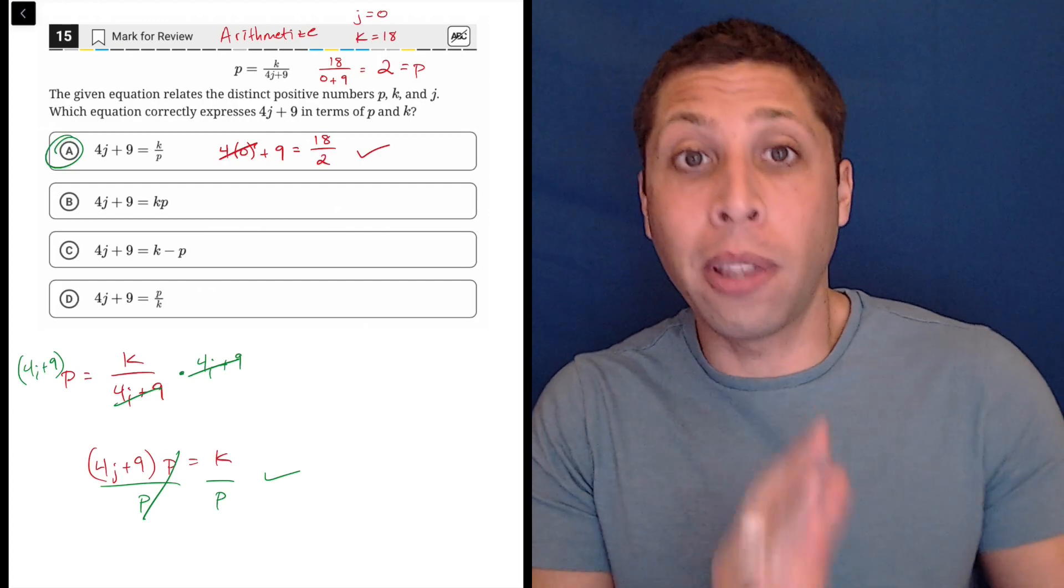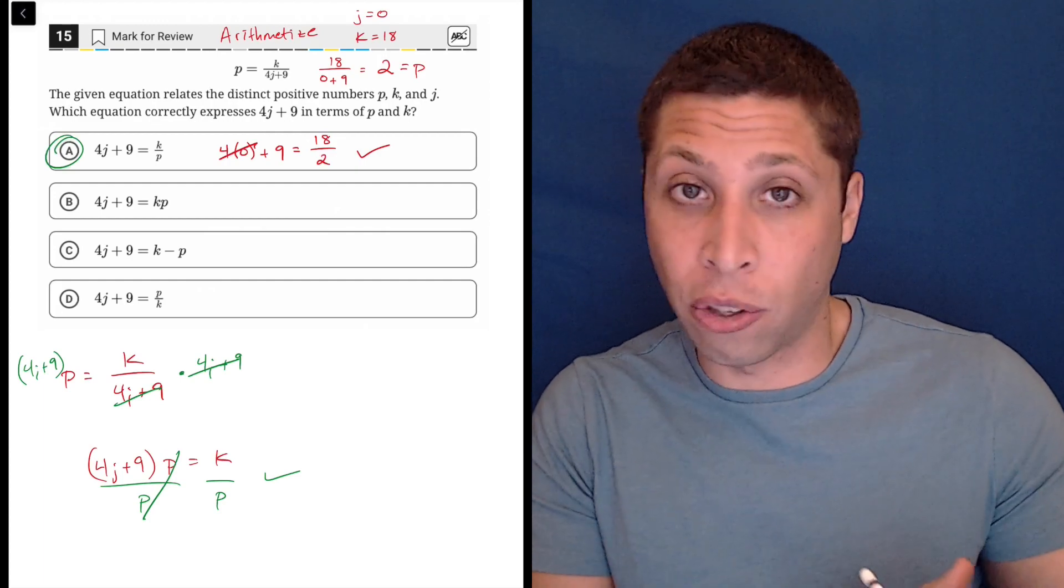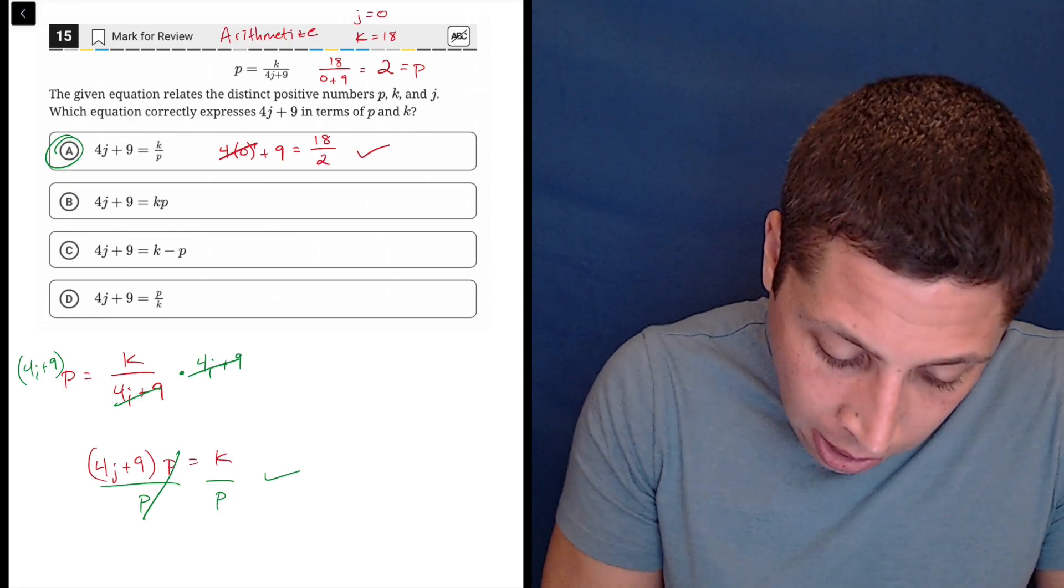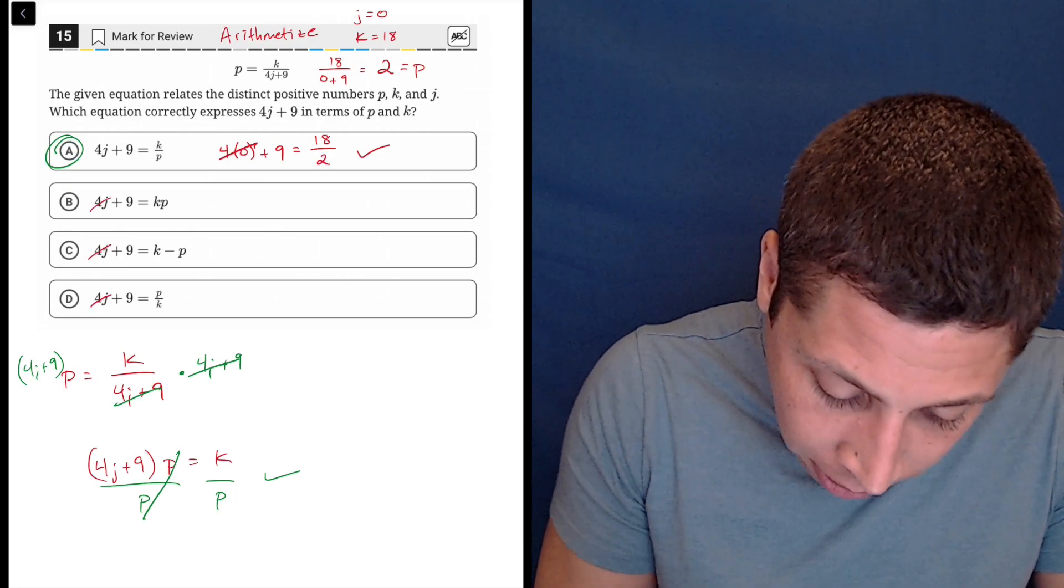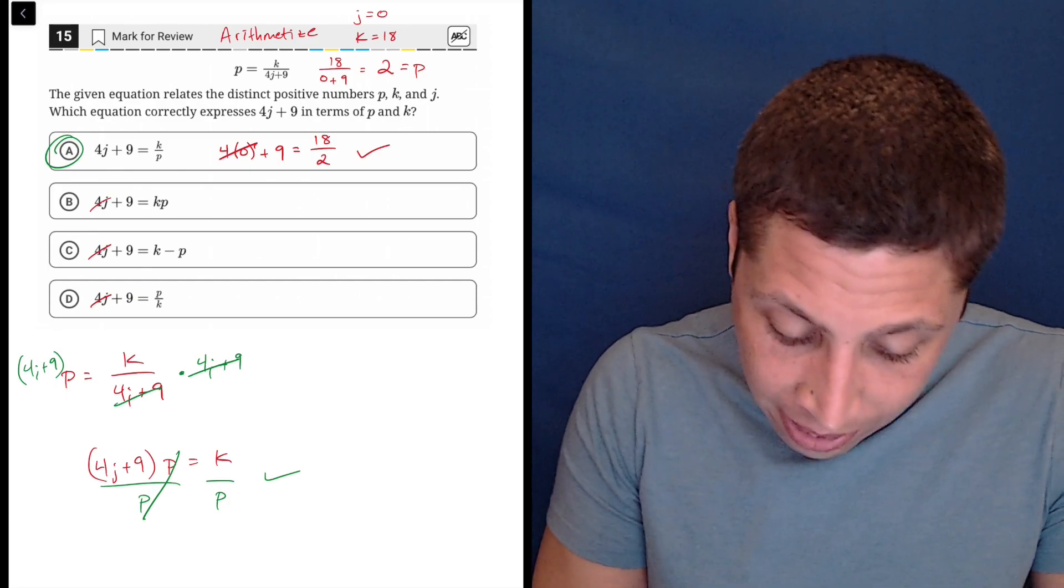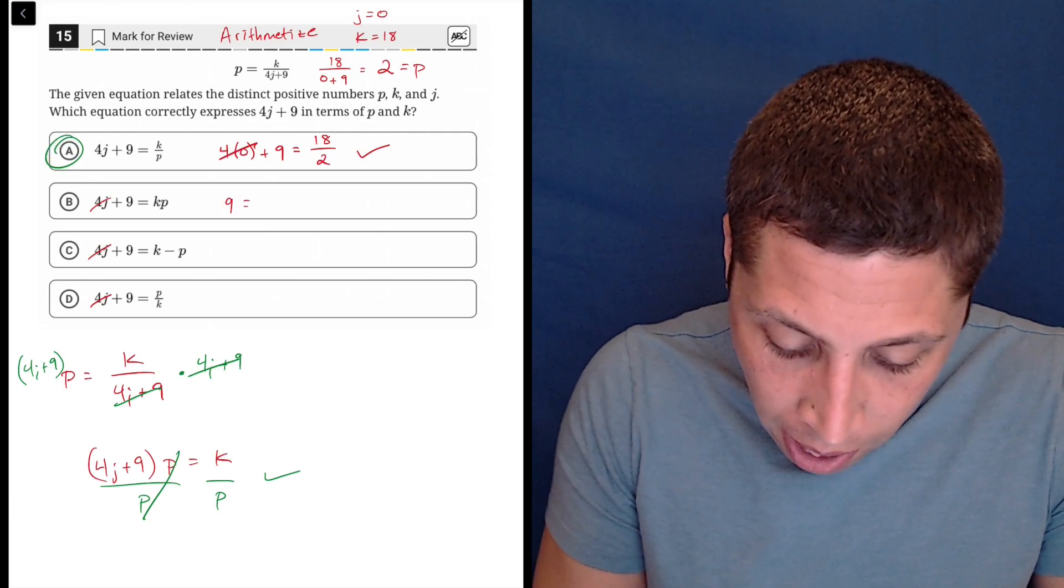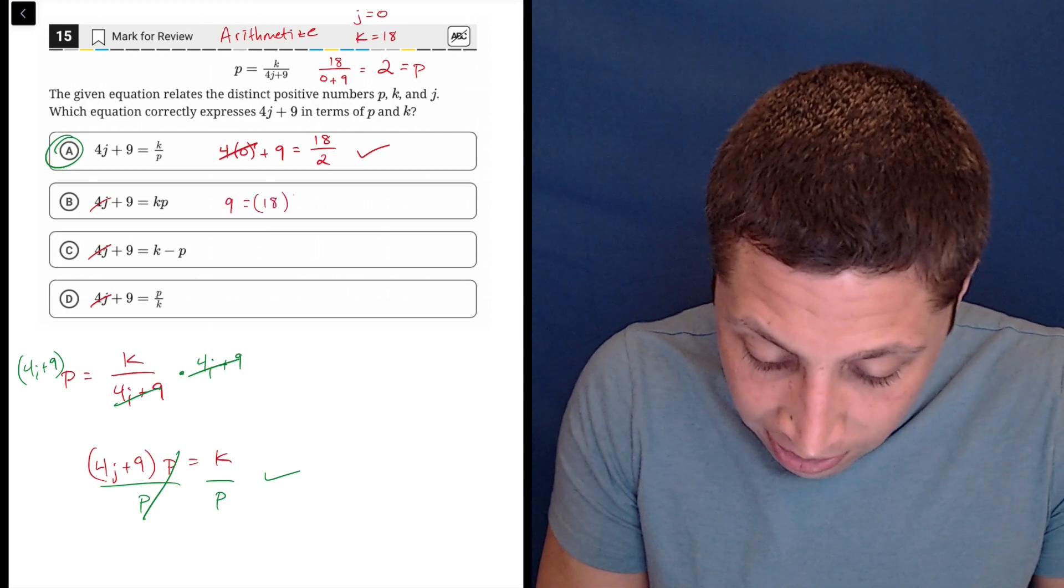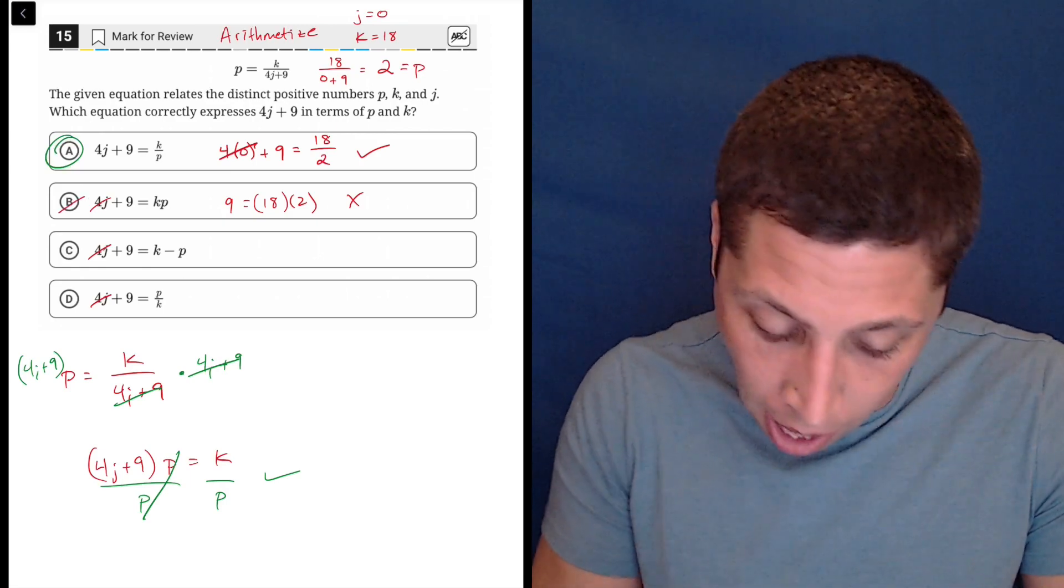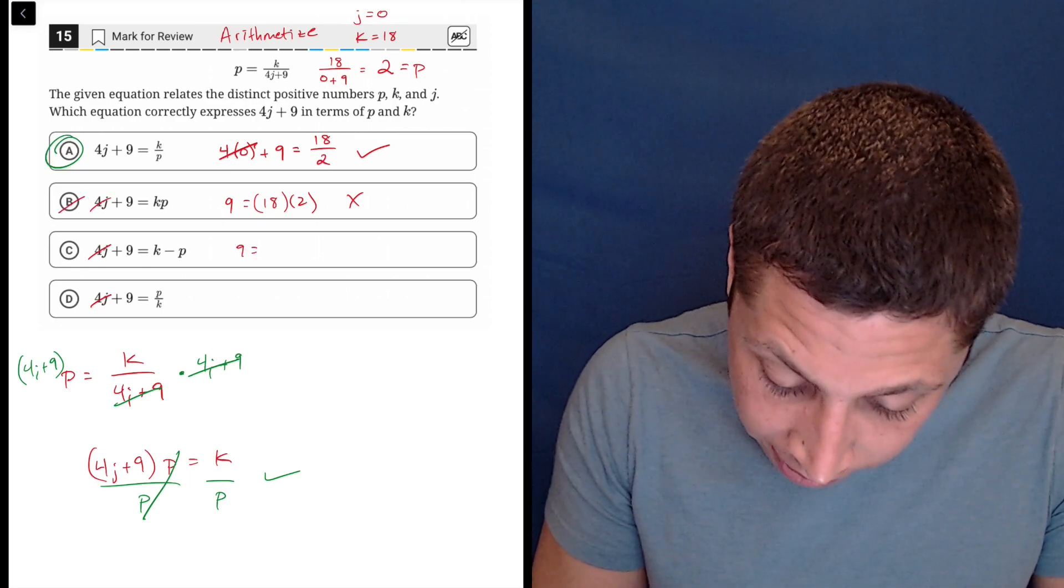So I would know, okay, at least with these numbers this equation works. I would need to try everything else to be sure, but as I go through, we'll see all the j's are going to cancel because those are all going to be multiplied by 0. So really we're seeing, okay, does k times p equal 9? 9 is equal to, k is 18, p is 2. No. 18 times 2 is 36, not 9.